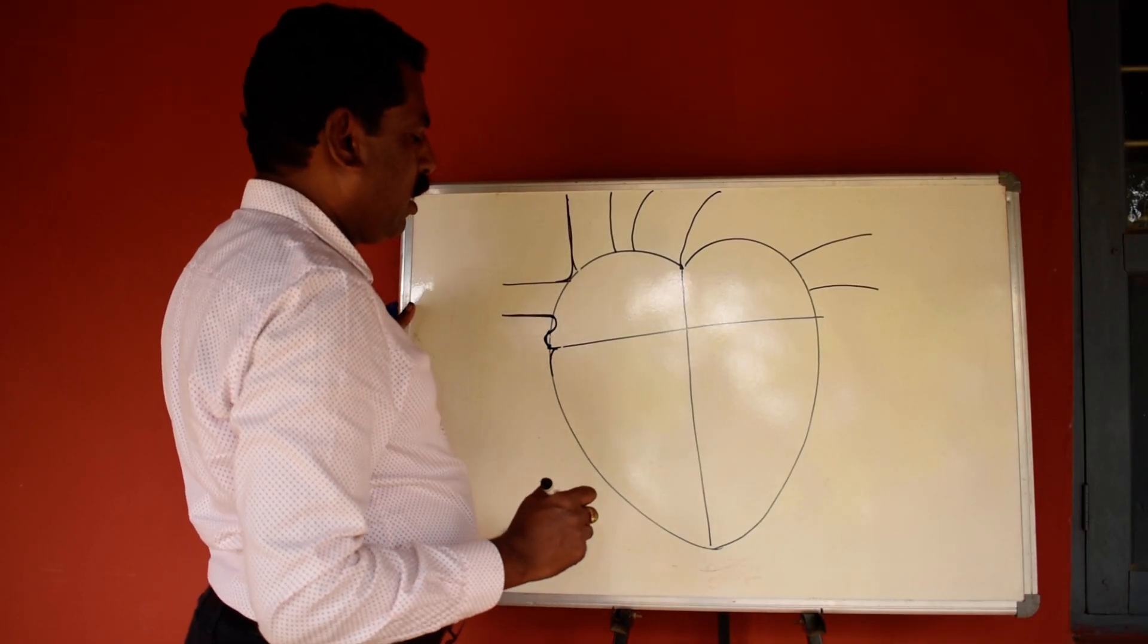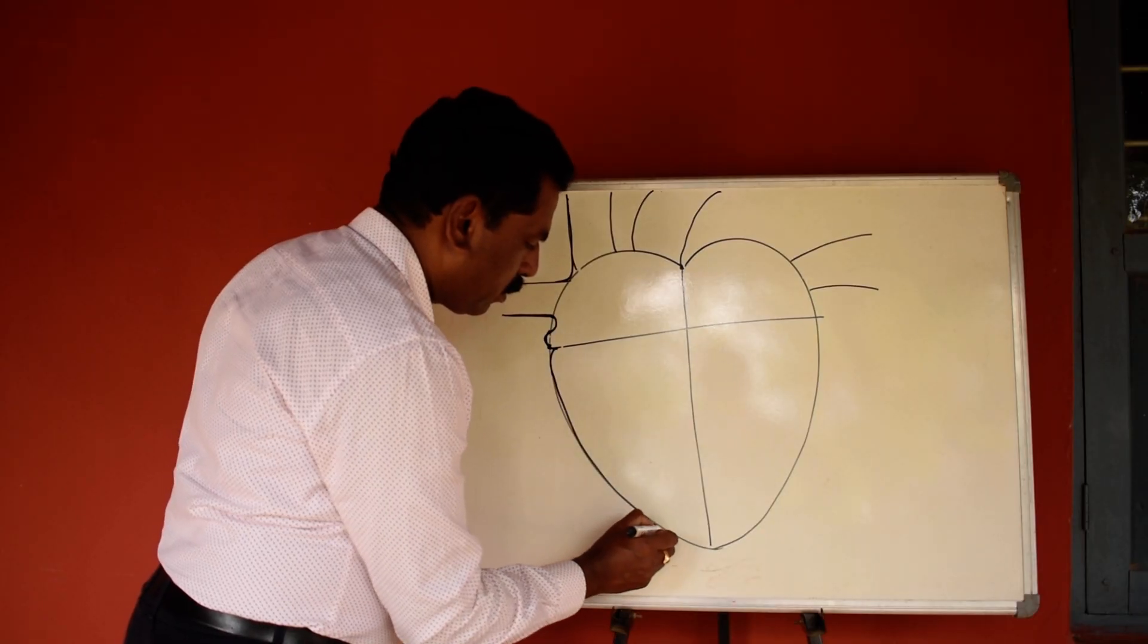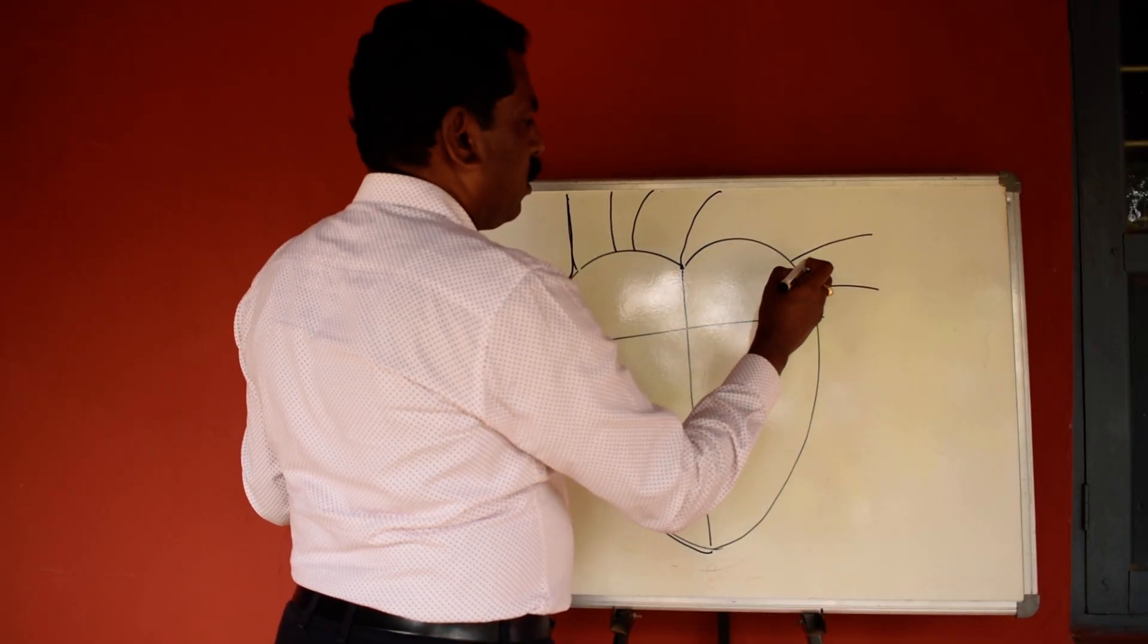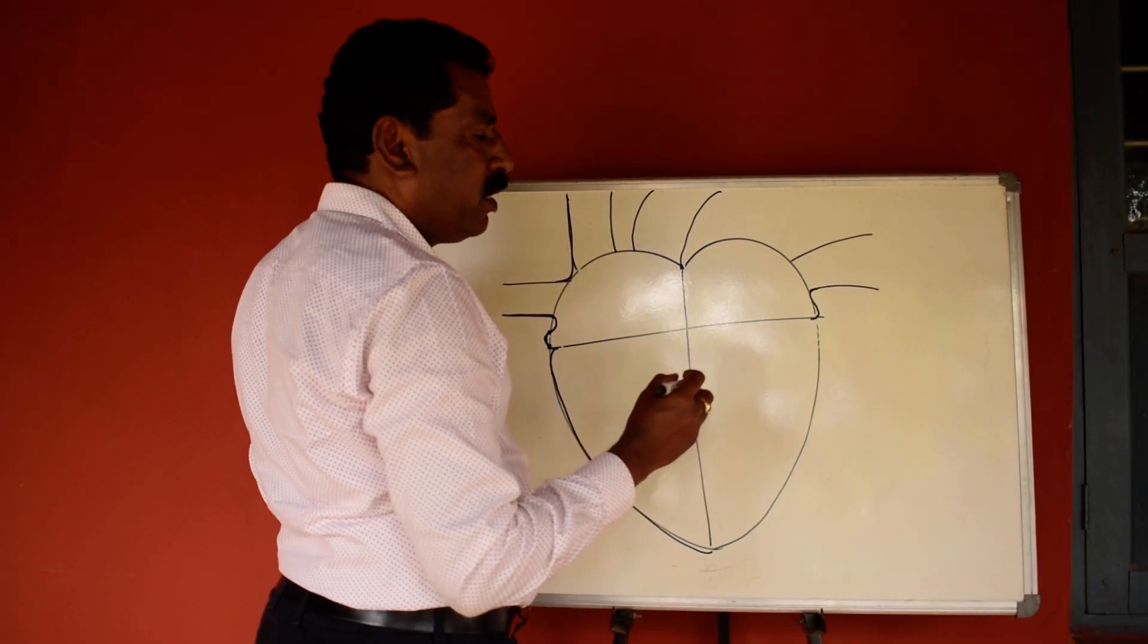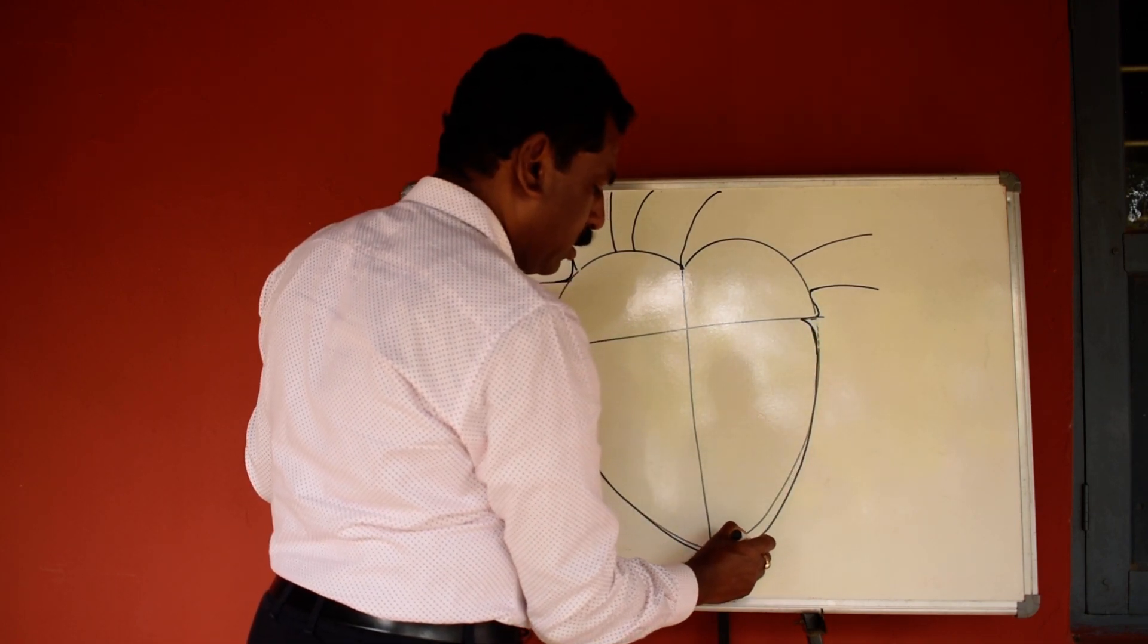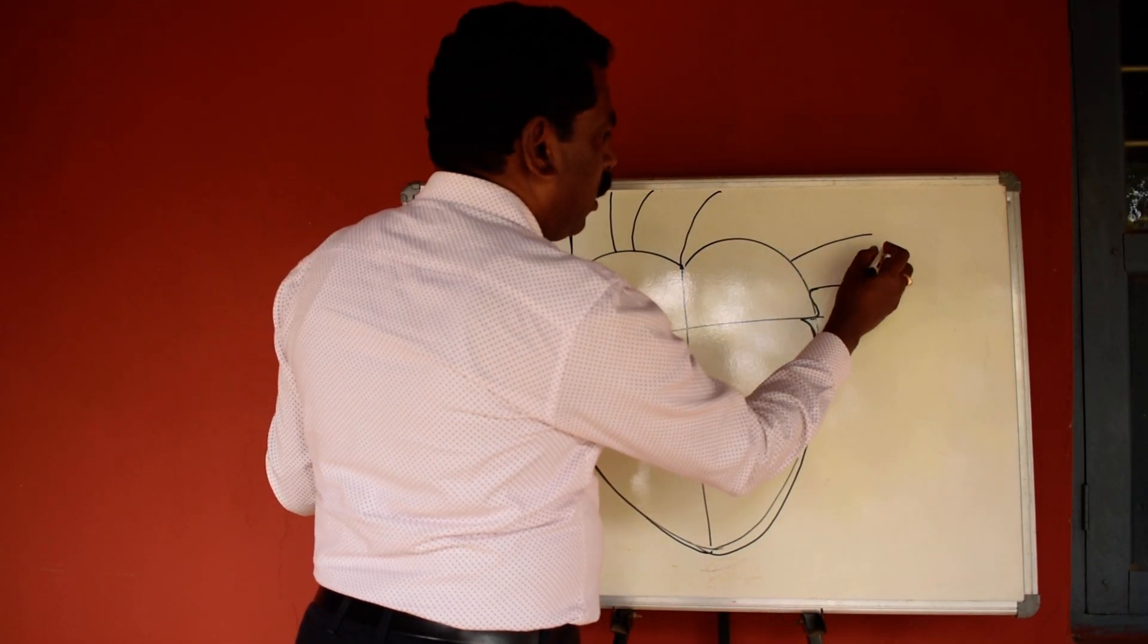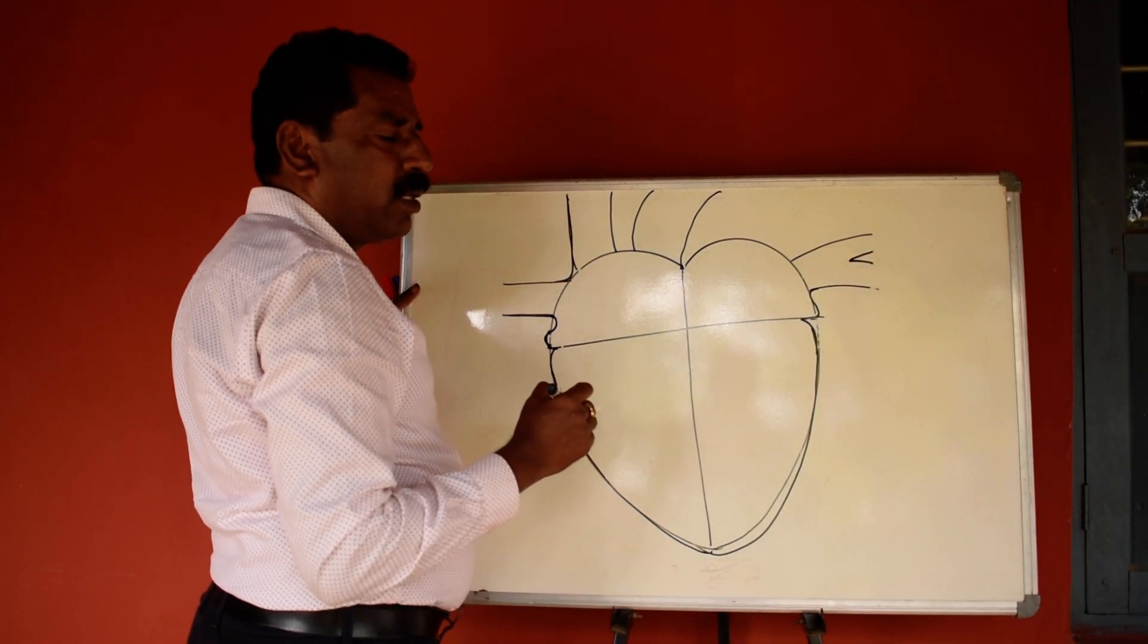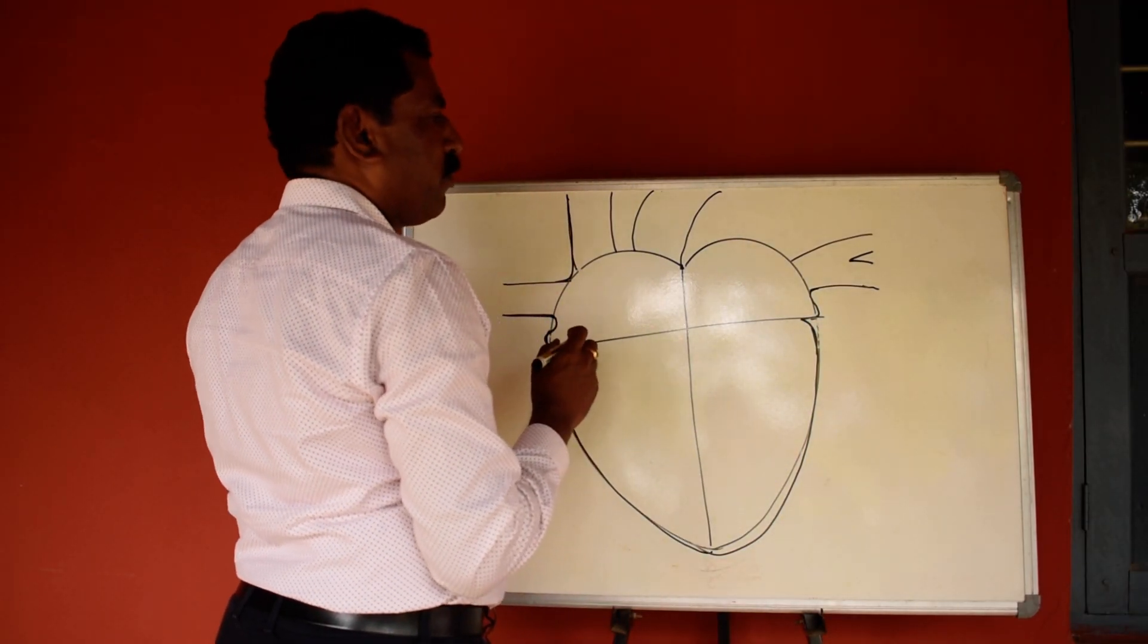And I will draw in this. Again, here also I continue this like this. Now here one more. The branch appeared in this pulmonary vein.